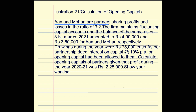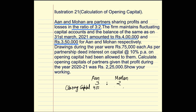Aan and Mohan are partners. There are two partners — Aan and Mohan — and they are sharing profits and losses in the ratio 3:2. The firm maintains a fluctuating capital account, and the balance as on 31st March amounted to 4 lakh for Aan and 3 lakh 50 thousand for Mohan. Since this capital is on 31st March, it is the closing capital.